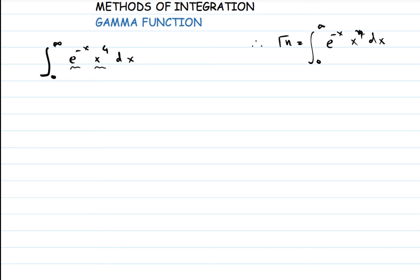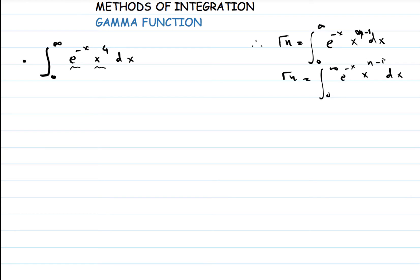Gamma of n equals the integral from 0 to infinity of e raised to minus x, x raised to n minus 1, dx. This is the definition of the gamma function. If you look at this, before making substitutions, we can see that this function resembles the definition, but the only problem is we don't have the n minus 1 expression explicitly. Since this is a gamma function, we can find the value by applying just the concept of the gamma function.